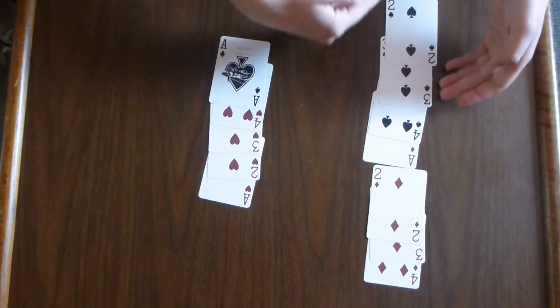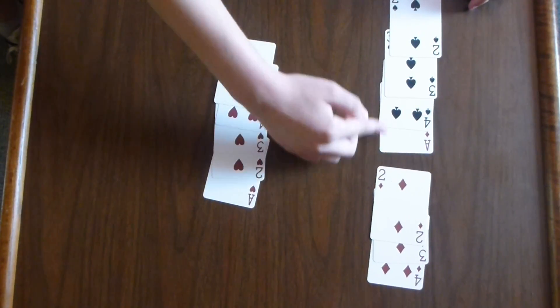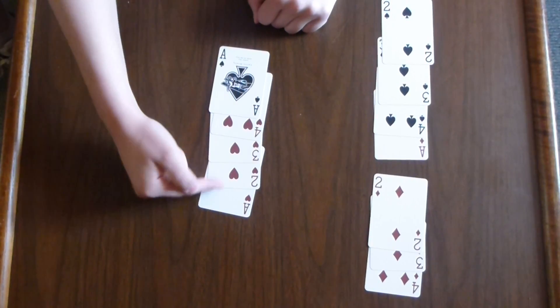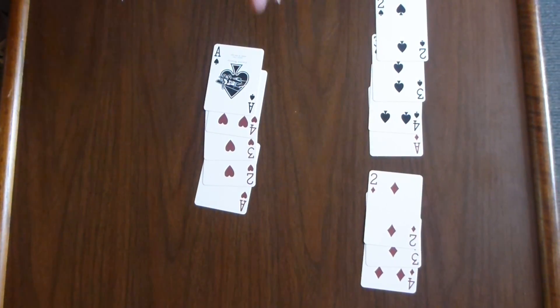In this pile, the order from bottom to top of the deck is ace-two-three-four, whereas here the pattern is four-three-two-ace. This is why the Gilbreath Principle works.